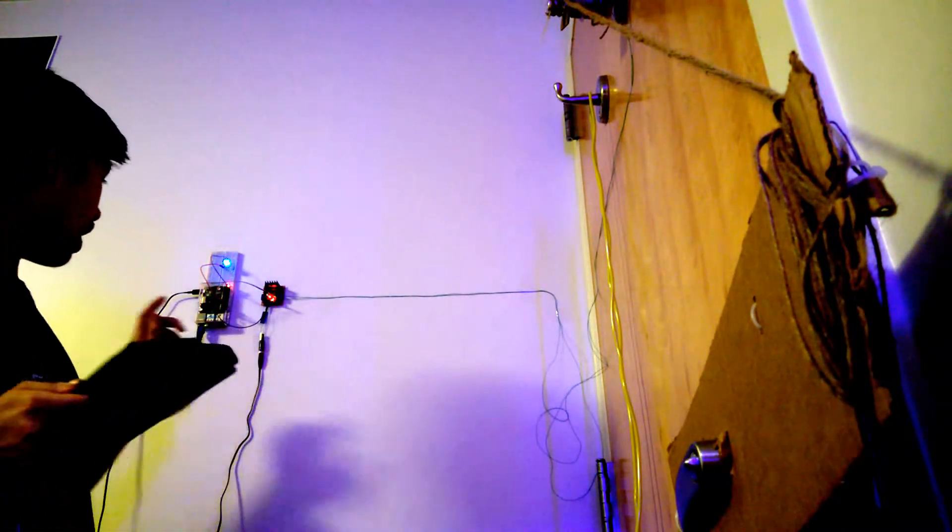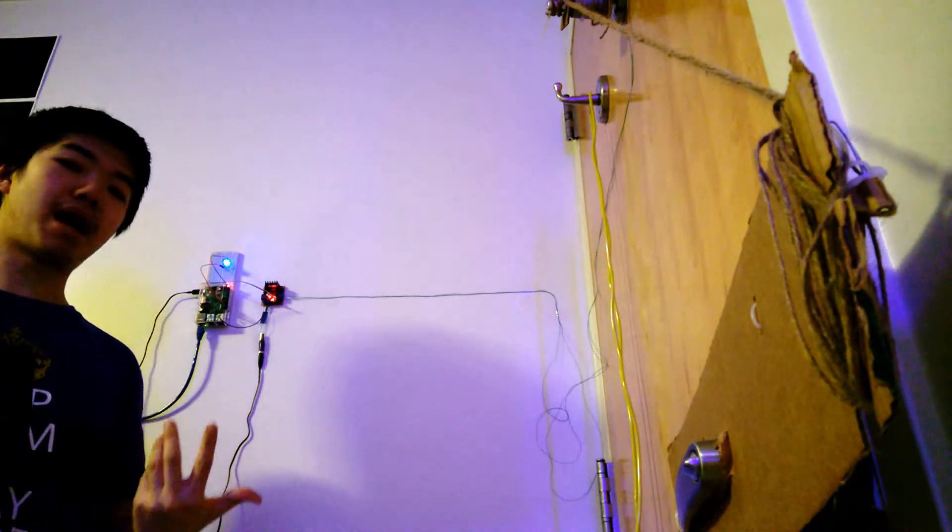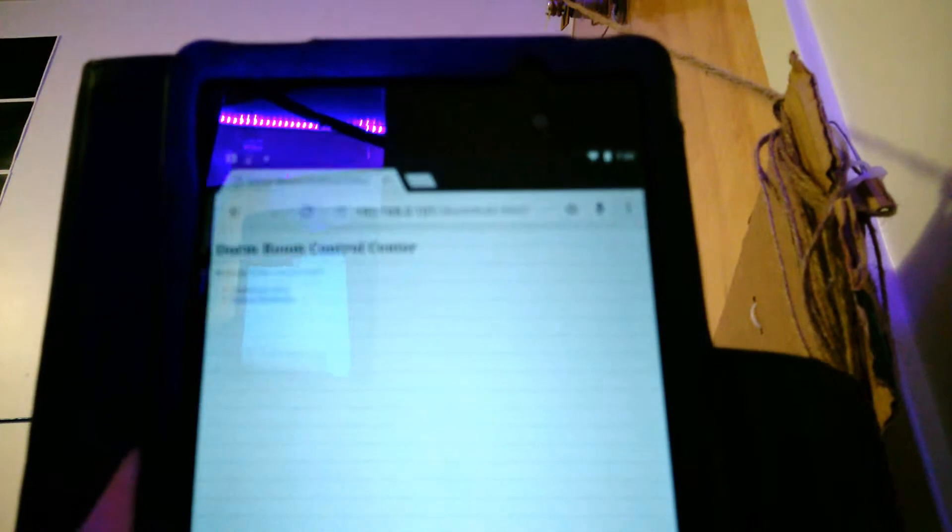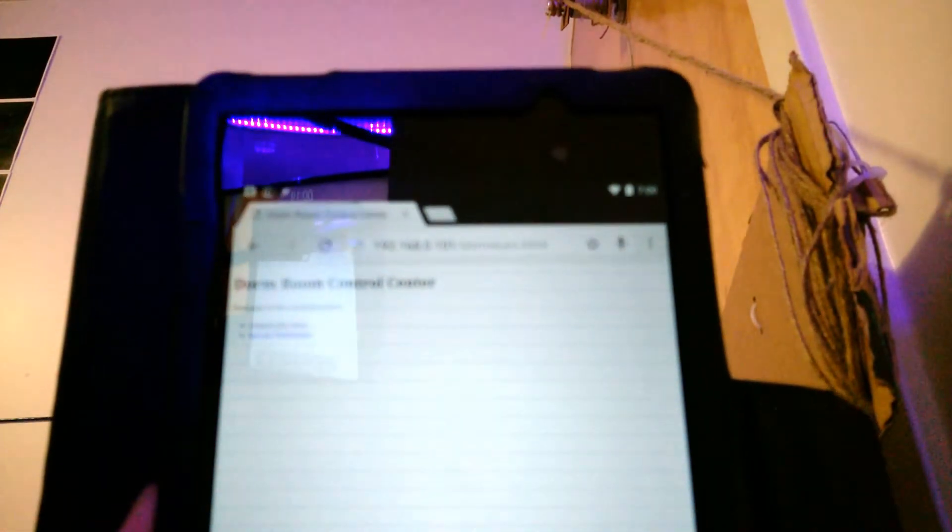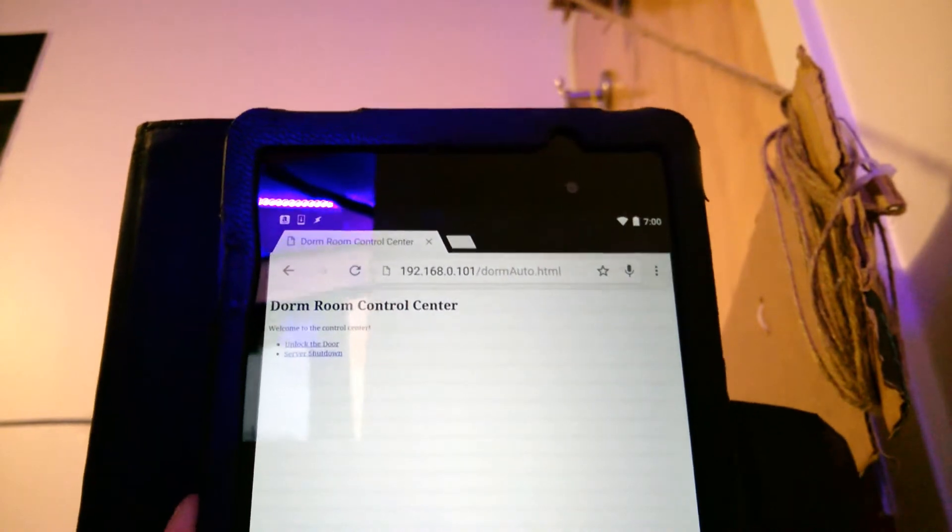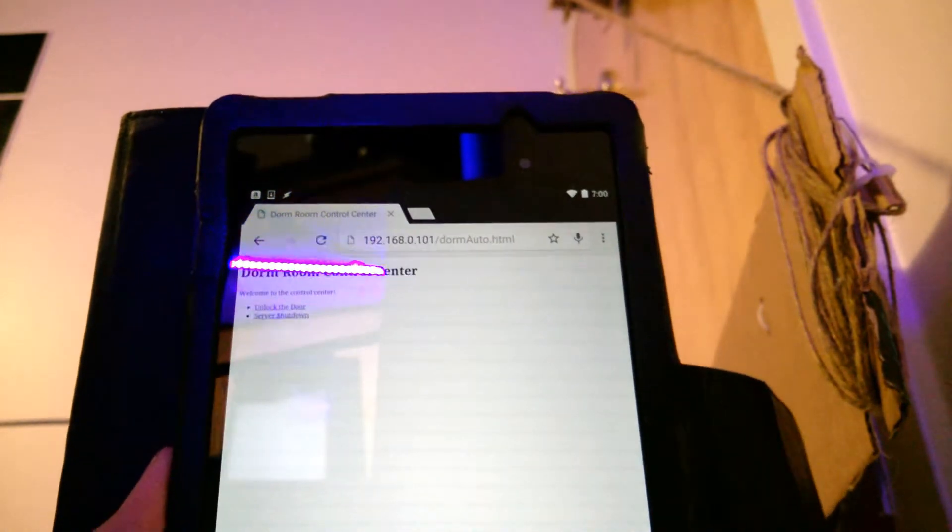Alrighty, we're back. So what I've done is that I've added some code to the Raspberry Pi and it now is serving this little web page. I don't know whether you can see that. Get it in focus. Yep. Anyway, Dorm Room Control Center. That's what it is.